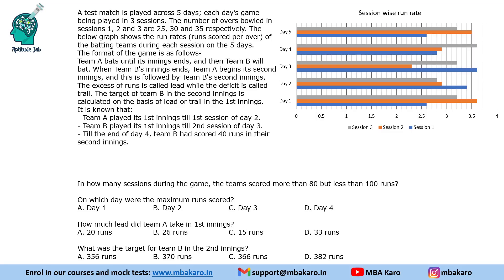It becomes even more simple if you know the rules of cricket. A test match is played across 5 days, each day's game being played in 3 sessions. The number of overs bowled in sessions 1, 2, and 3 are 25, 30, and 35 respectively. The graph shows the run rates — runs scored per over — of the batting team during each session on the 5 days. Run rate equals runs divided by number of overs, so runs equals run rate multiplied by overs played.